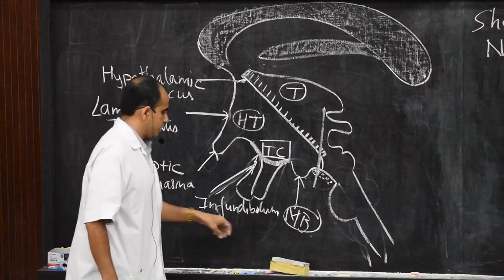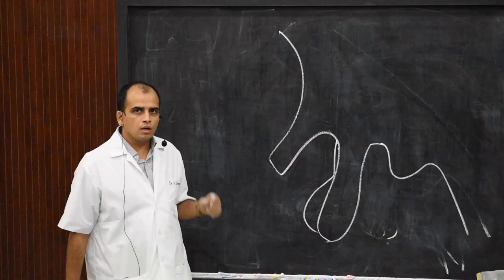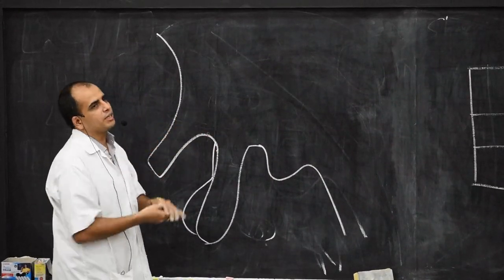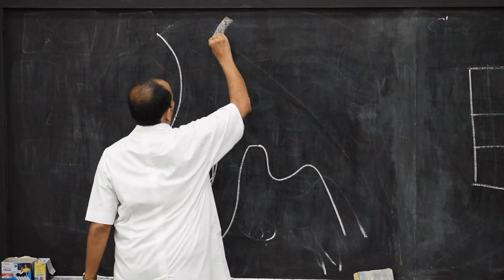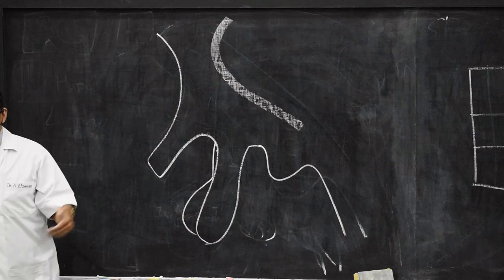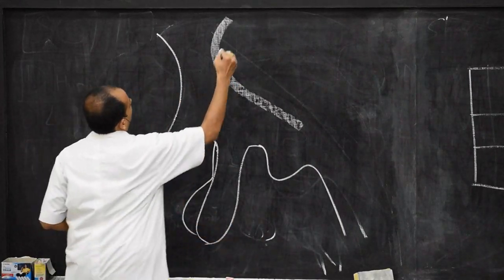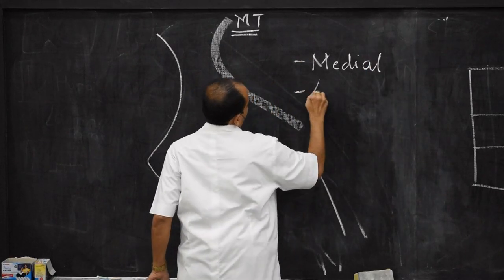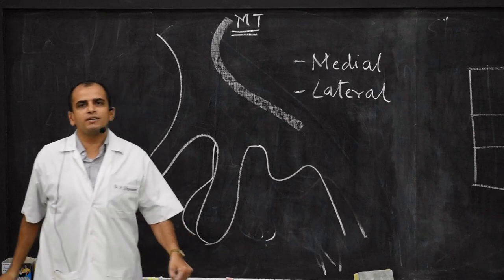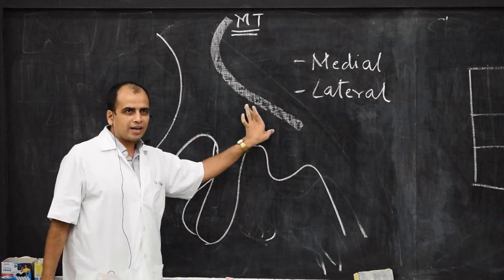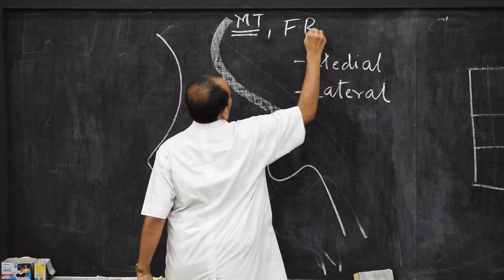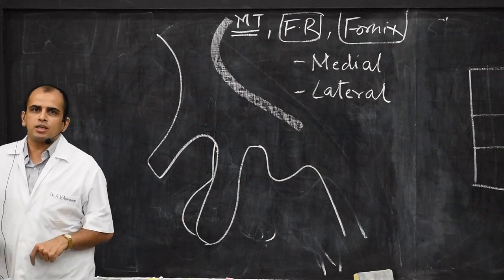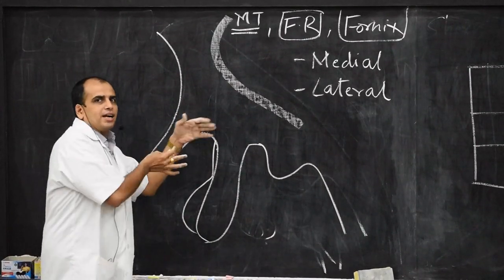Now let us look at the various nuclei of the hypothalamus. Before going to the nuclei, we need to see how the hypothalamus is divided into various zones. There is one fiber tract called the mammillothalamic tract passing through the hypothalamus, and this mammillothalamic tract — along with fibers of the fasciculus retroflexus and some fibers of the fornix — divides the hypothalamus into the medial zone and the lateral zone.